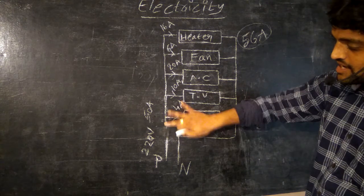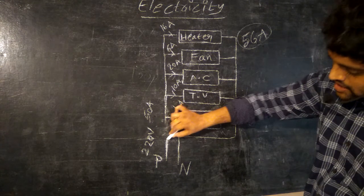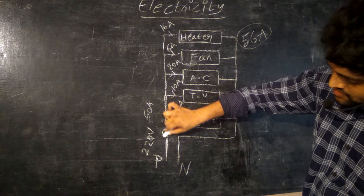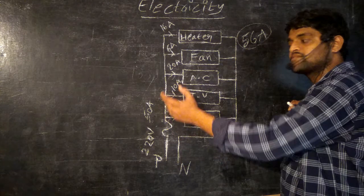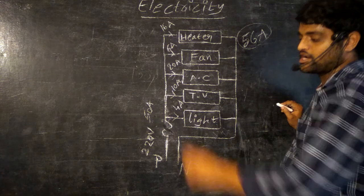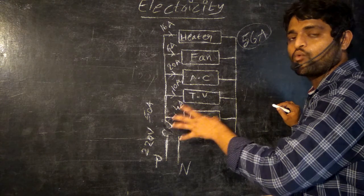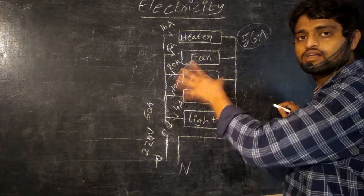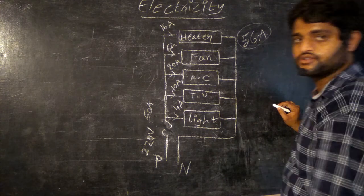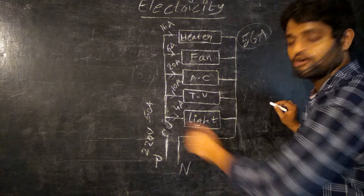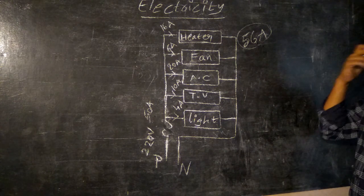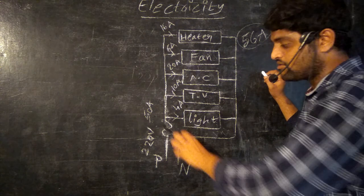For avoiding this we will introduce a fuse. Then the fuse will be broken up. The short circuit, what will happen in the total circuit will be stopped by using the fuse. The fuse will break down and that will stop the total damage of the household circuit. So this is the importance of fuse.